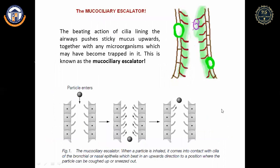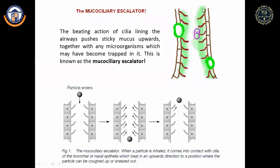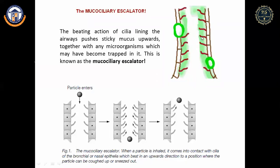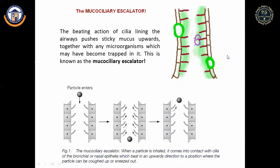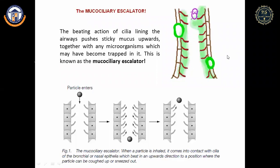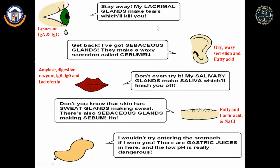The mucociliary escalator: when you breathe in and a foreign particle enters your respiratory tract, cilial projections along the lining of the airway produce an upward movement. The foreign microbe gets trapped in the mucus layer and cilia push it out. In the eye, lysozyme destroys bacterial cell walls. The waxy secretions of the ears, from sebaceous glands at pH 3 to 5, prevent most microbes from surviving.